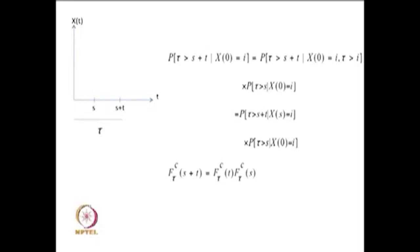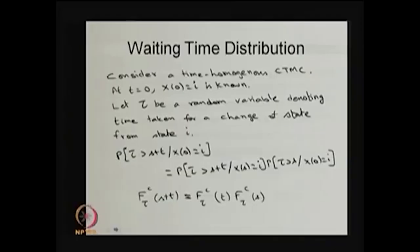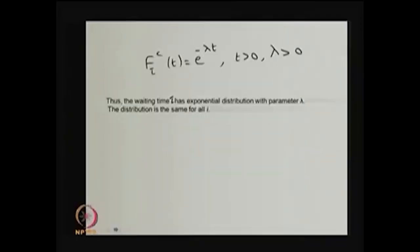We need to find which distribution satisfies the property: complement CDF at s + t equals the product of complement CDFs at s and t. In this derivation we used the time-homogeneous property, the total probability rule, and the Markov property. If you substitute any function of the form e^(−λt), the equation is satisfied, as long as λ > 0 and t > 0.